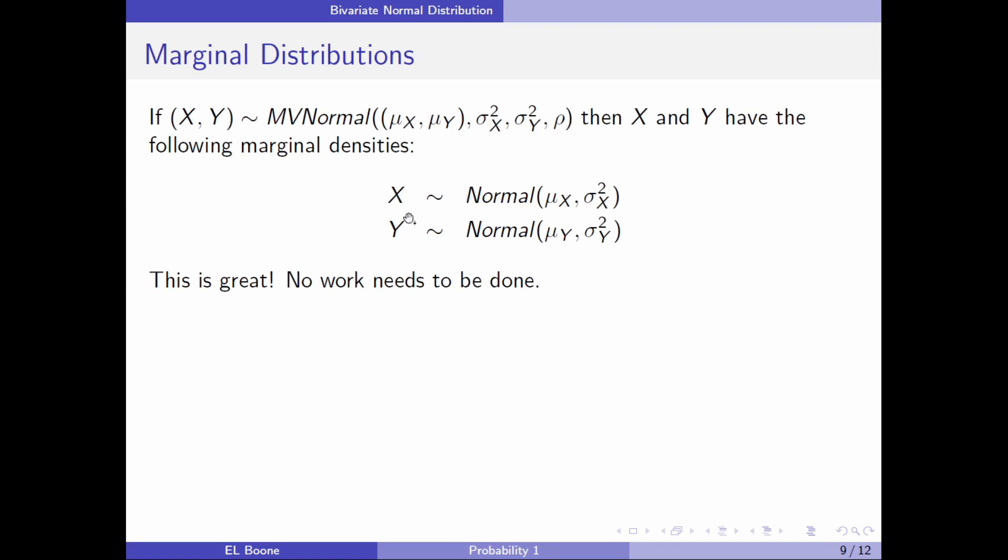then if I just looked at x by itself, it's just normal with mean μ_x and variance σ²_x. And if I look at y by itself, it's just normal with μ_y as its mean and σ²_y as its variance. Don't really need to do any other work. You already have all the information there.